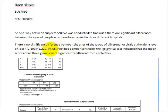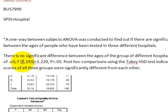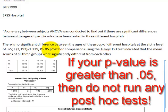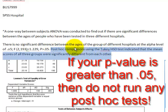But this is important. If your F-score is not large enough to give you a p-value of less than 0.05, that means that you did not get enough evidence to reject the null. In other words, you did not prove that there was a significant difference between the ages. So that first part's right — there is no significant difference between the age groups. So if that is the case, there is no significant difference, you would never run a post hoc. So this part is wrong.